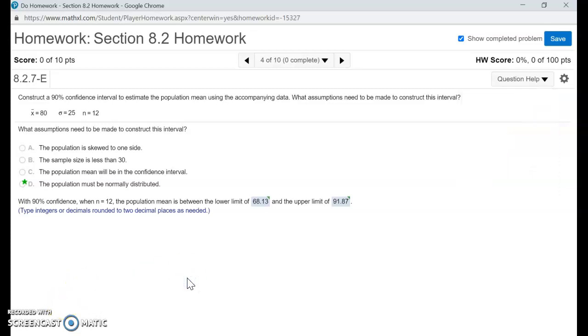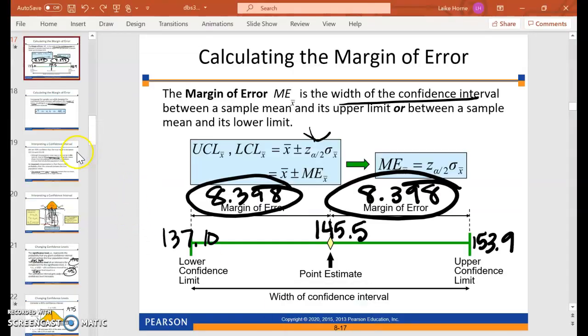Okay, question 4 – we're still doing confidence intervals. And notice that n is 12. So this is – we can't use a central limit theorem here.